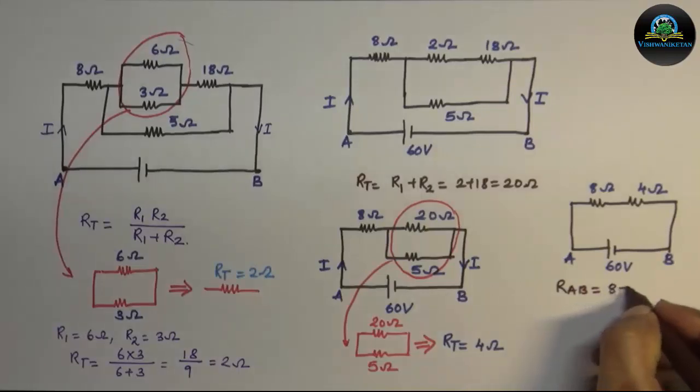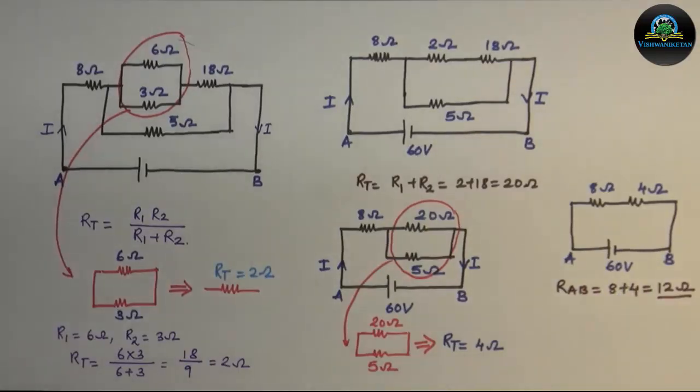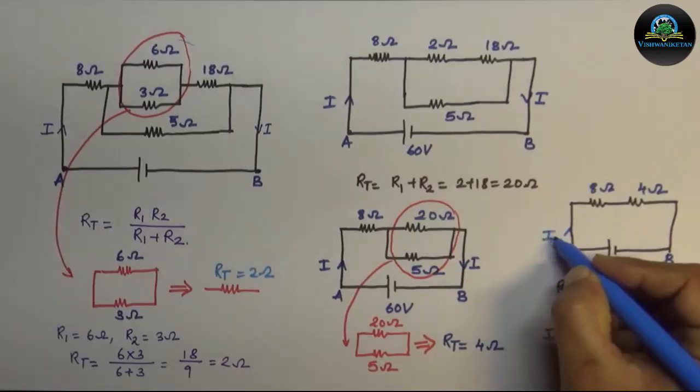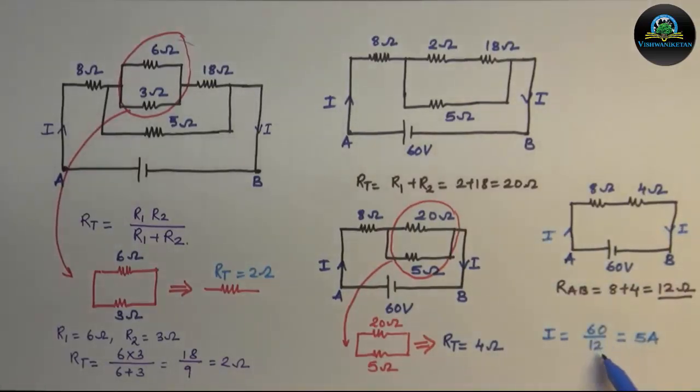So RAB is 8 plus 4, that is 12 ohm. So now by Ohm's law, the current flowing through the circuit will be 60 divided by 12, that is 5 ampere.